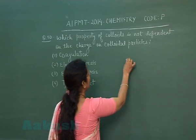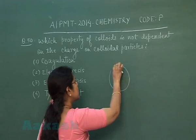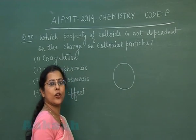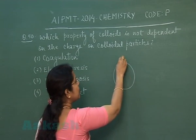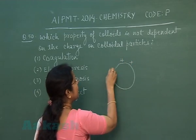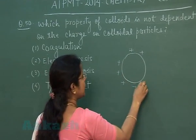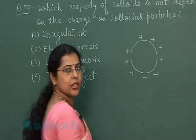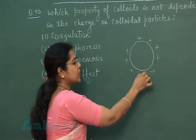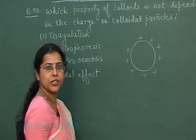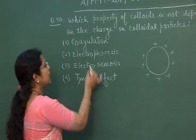As we know, colloidal particles — that is, the dispersed phase — are always charged. The charge may be positive or negative. Now suppose we are taking a colloidal solution in which the dispersed phase is positively charged. We can now relate these options.